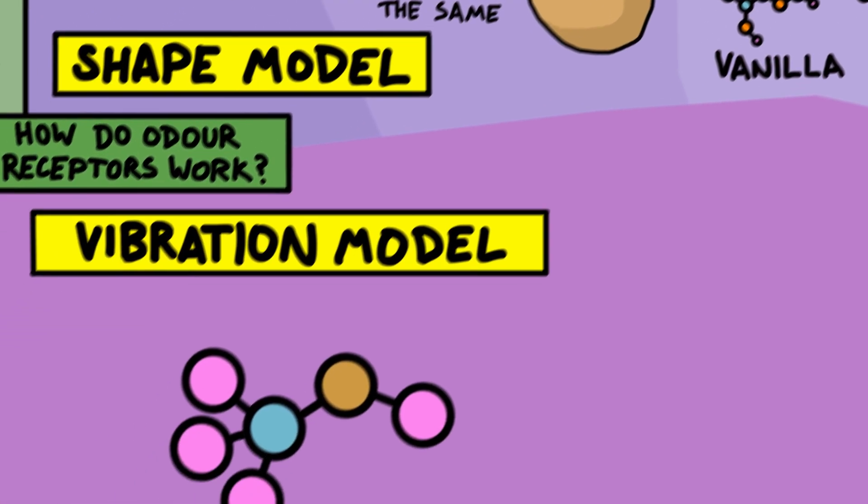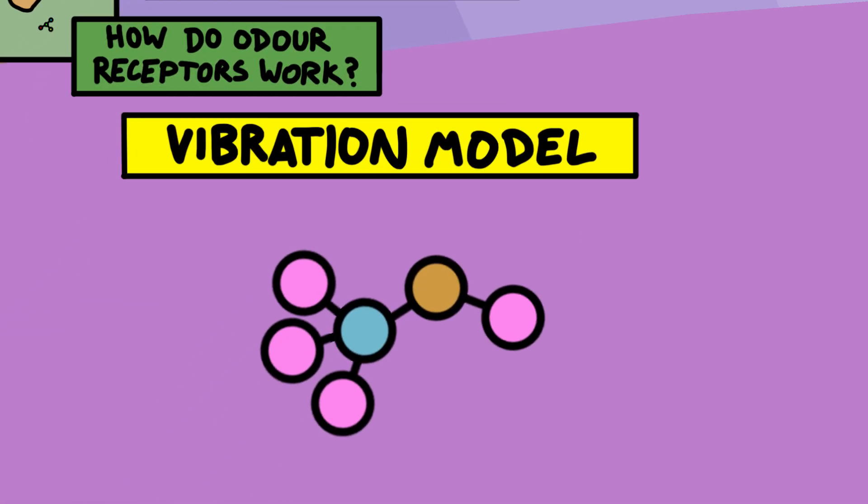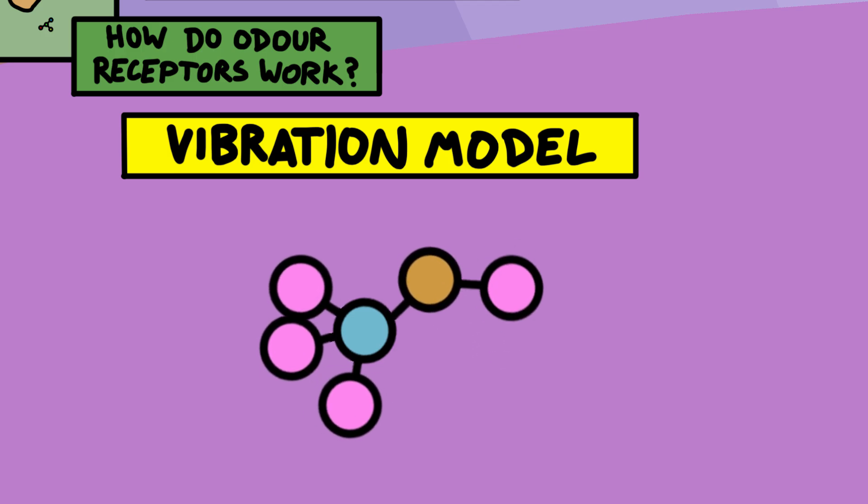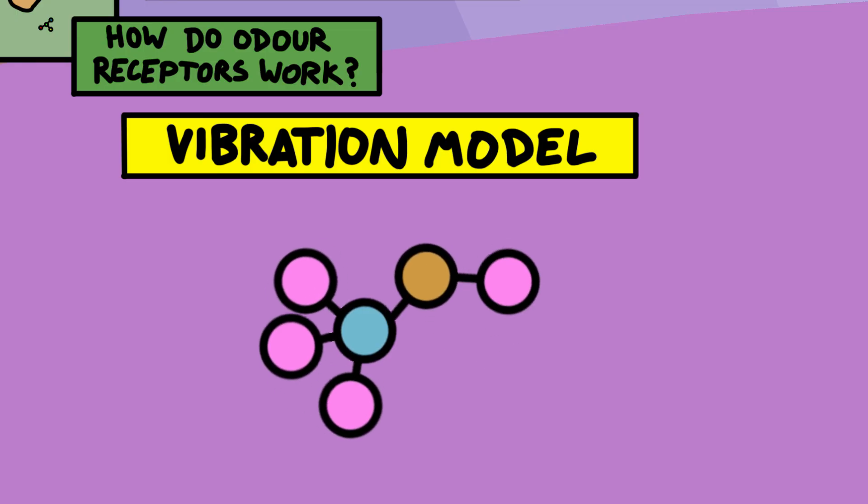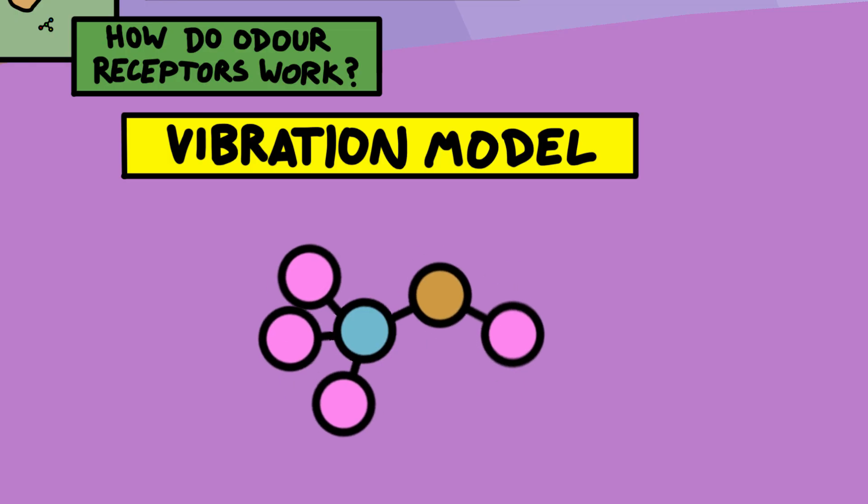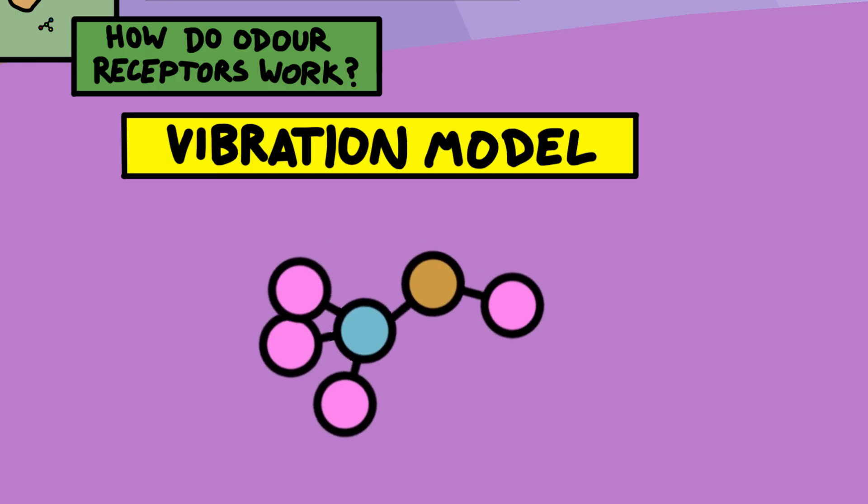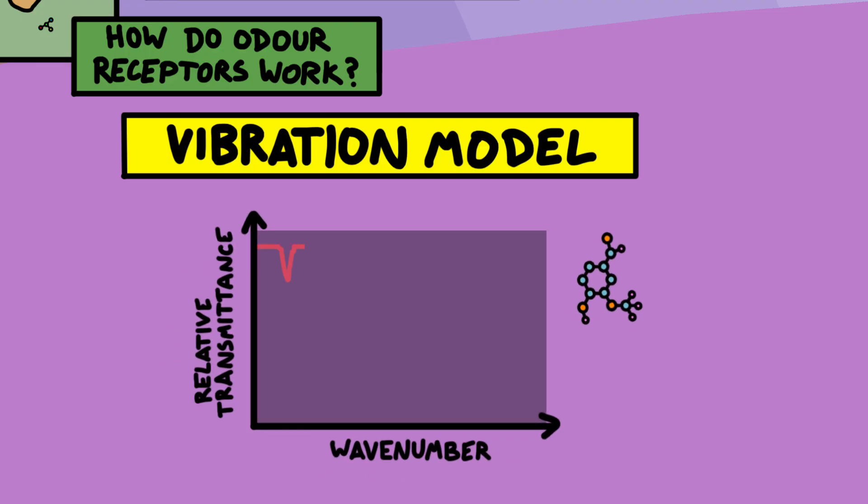So there's an alternative theory of smell receptors, the vibration theory. In the vibration model of smell, the smell receptor can tell the difference between different molecules based on how they vibrate. Each chemical bond has a certain resonant frequency that it naturally vibrates at, kind of like how an open guitar string always resonates at the same frequency and so always gives you the same pitch. So different molecules have a different signature set of vibrational frequency, which depends on what atoms they're made of and how they're all connected.